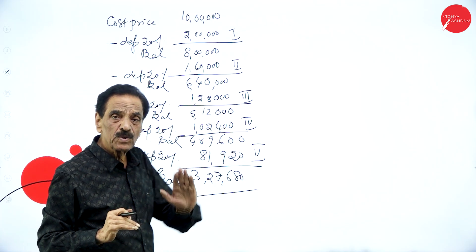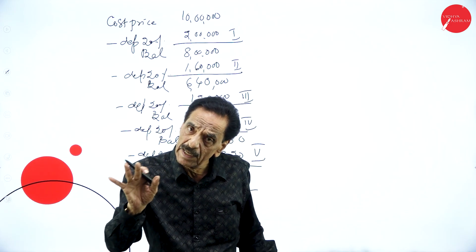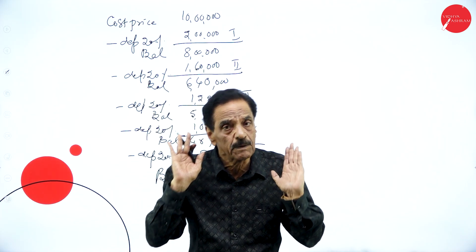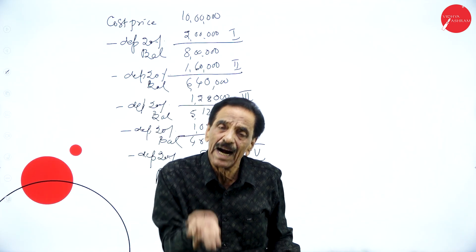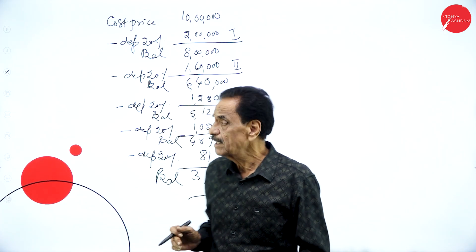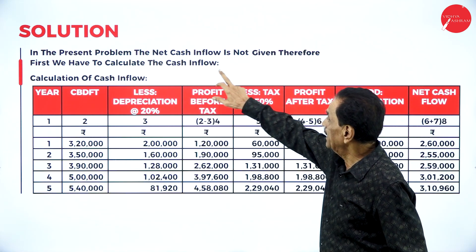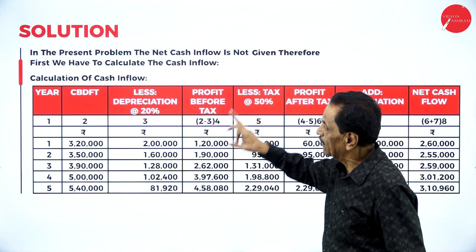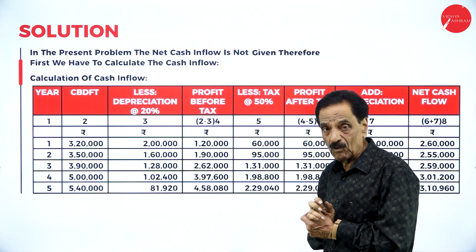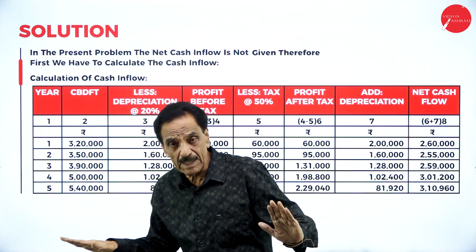Now you have to move on. The formula is: cash inflow before depreciation and taxation, minus depreciation, minus taxation — that is profit after taxation — then add back depreciation to get cash inflow. In the present problem, the net cash inflow is not directly given, therefore first we have to calculate the cash inflow.